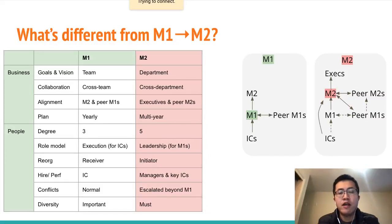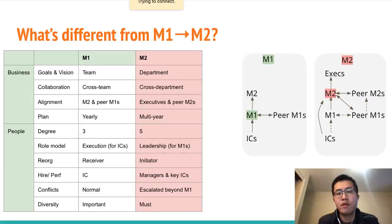An M1 needs to hire for diversity regarding demographics and seniority of experiences, but if you cannot achieve it due to small team size and headcount, it's understandable. But it's a must for an M2 to have diversity in a team. Otherwise, it will impact the team's health and culture negatively.